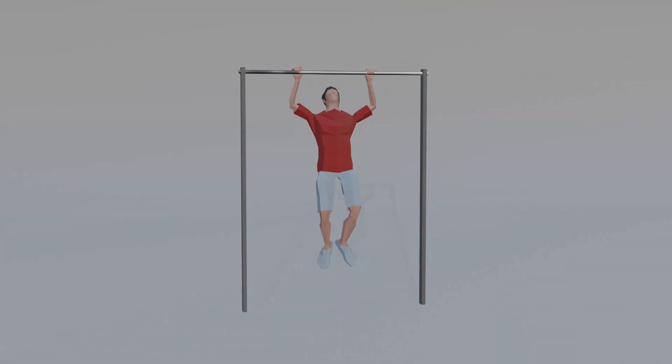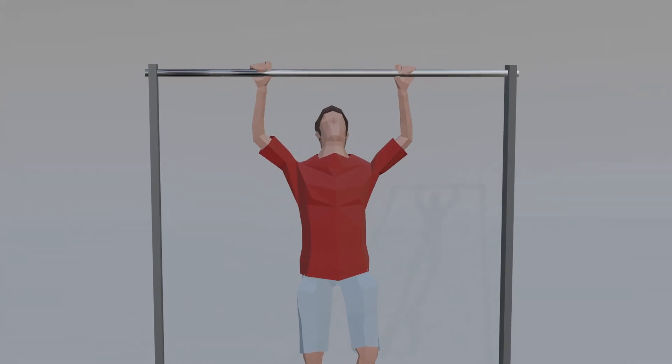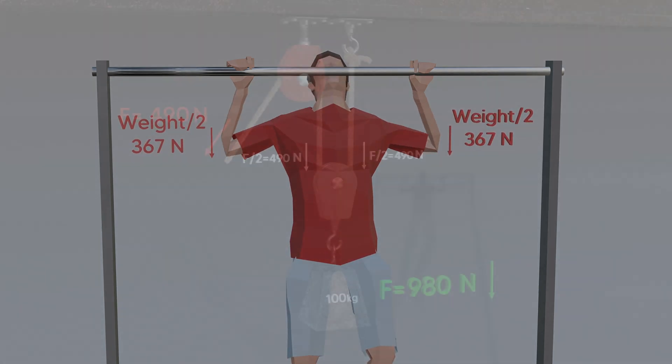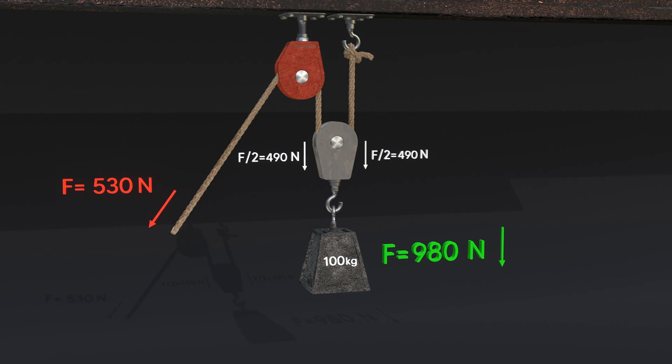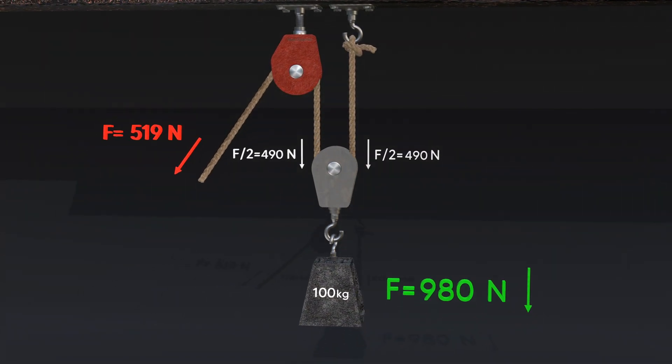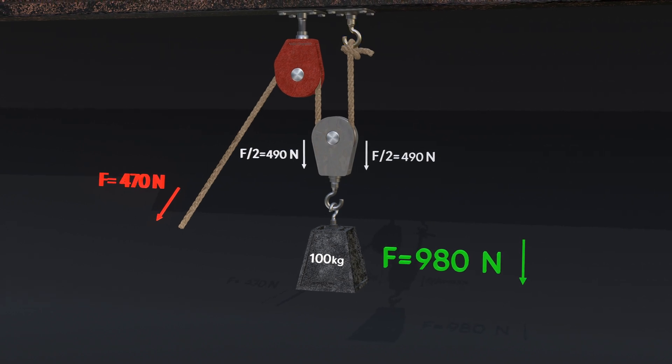This is the same as a pull-up. Each hand lifts half of our weight. Therefore, when pulling the rope, we need to lift only half the weight of the load, since the second half of the load is distributed to the hook.